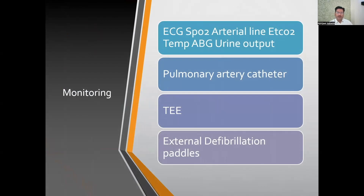For monitoring, apart from routine ECG, saturation, arterial line, ETCO2, temperature, ABG, and urine output, we place a pulmonary artery catheter for all CABG patients, since one lung ventilation increases RV afterload and PA pressure and must be carefully monitored. TEE is compulsory for all MICS patients — valve or CABG. We also use external defibrillation paddles for all patients, as the small incisions make internal paddle use difficult.